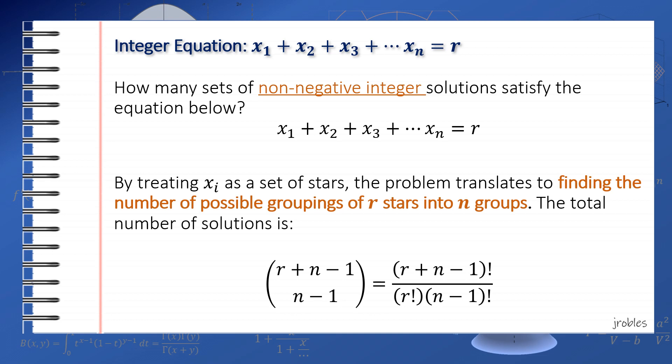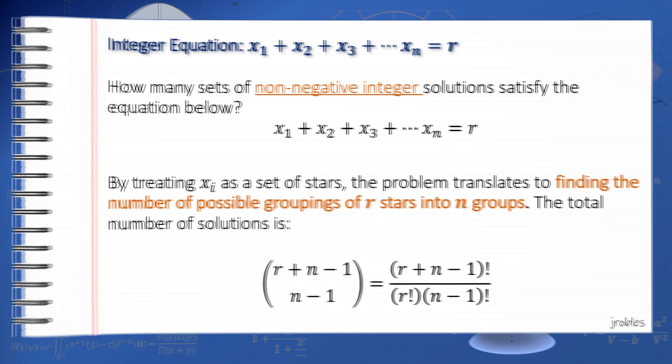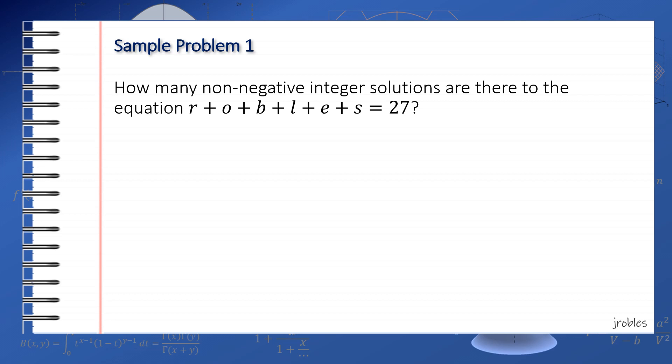Now let's work on some sample problems to see how to apply the stars and bars technique. For the first sample problem, how many non-negative integer solutions to the equation r + o + b + l + e + s = 27? Since we are looking for non-negative solutions, this solution is pretty straightforward using the stars and bars technique.